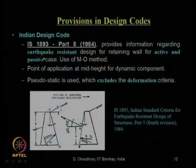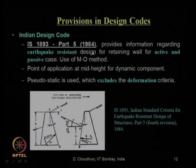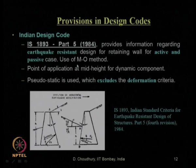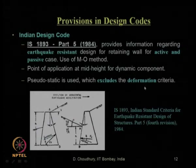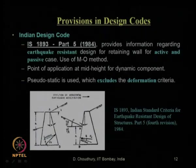We also discussed recommendations given by various design codes. Our Indian design code IS 1893 Part 1 was revised in 2002, but for retaining wall design, Part 5 of 1984 is still the latest version, which suggests use of the pseudo-static Mononobe-Okabe theory. There is no scope for displacement-based criteria. The point of application is a thumb rule: the static component acts at one-third from the base, and the extra dynamic component acts at mid-height.